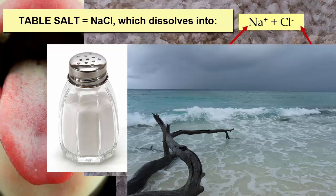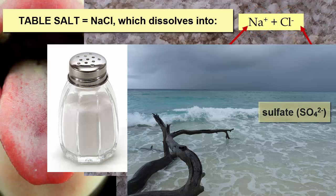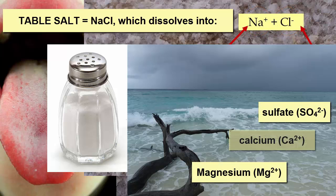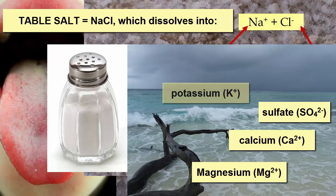So why does ocean salt taste so much like the salt we put in our mouths? Because the number one dissolved ion in the oceans is chloride, and the number two is sodium — just like salt. But in the oceans, there's more than just dissolved sodium and chloride. There's also dissolved sulfate, magnesium, calcium, potassium, and many more kinds of dissolved ions.